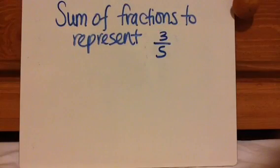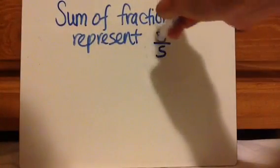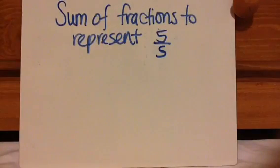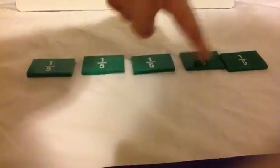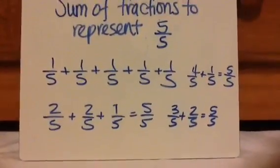Now show a sum of fractions representing 5 fifths, and include the unit fraction form. So we have 1 fifth plus 1 fifth plus 1 fifth plus 1 fifth plus 1 fifth; 4 fifths plus 1 fifth; 2 fifths plus 2 fifths plus 1 fifth; 3 fifths plus 2 fifths — many different ways.